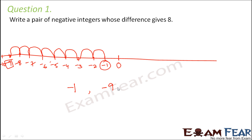So therefore, the other integer would be minus 9. Now, let us subtract minus 1 minus minus 9.